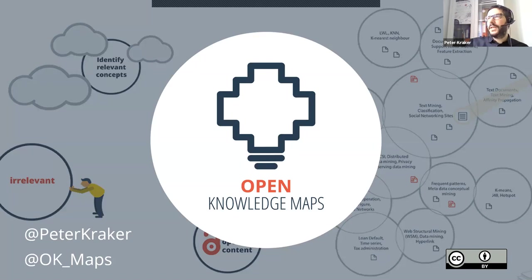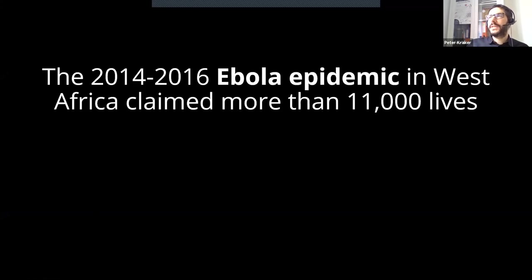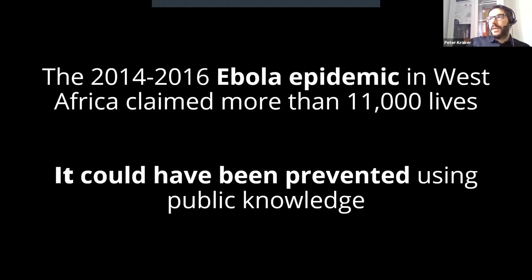I'd like to start in West Africa. Between 2014 and 2016, we saw the worst outbreak of Ebola in human history. This outbreak claimed the lives of more than 11,000 people and hit three of the poorest countries in the world: Sierra Leone, Guinea, and Liberia. One of the most troubling facts about this outbreak is it could actually have been prevented using public scientific knowledge, because one of the biggest problems was that public health officials around the world thought that Ebola was not endemic to West Africa.